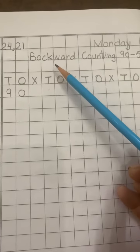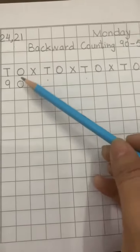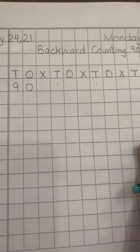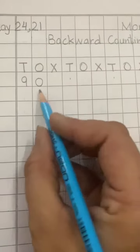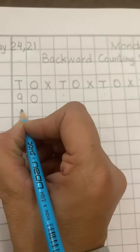Today we will do backward counting 90 to 51. Start writing with ma'am: 90.